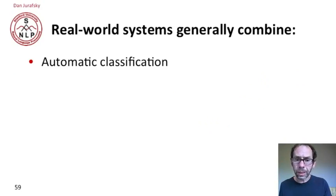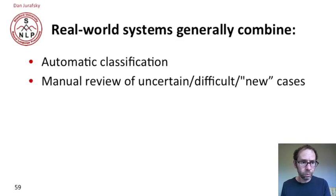A real world system in general will combine this kind of automatic classification, whether from rules or supervised machine learning, with manual review of uncertain or difficult or new cases.